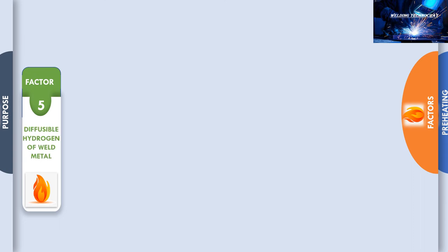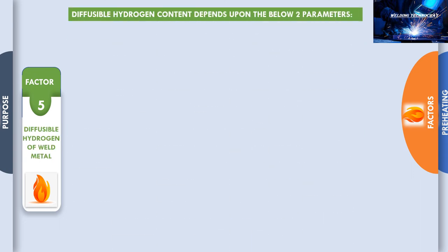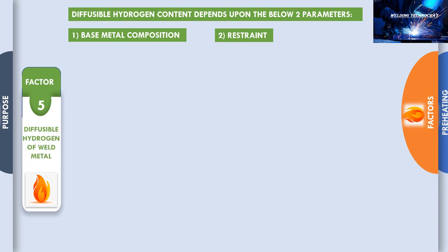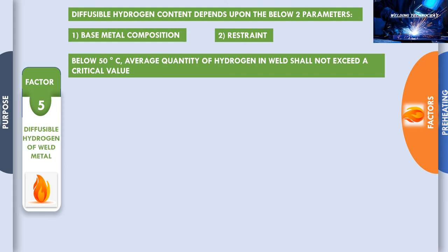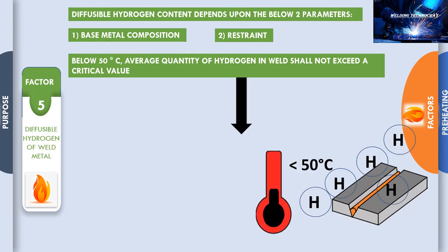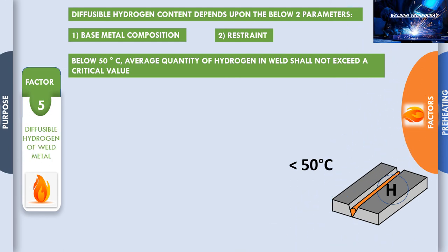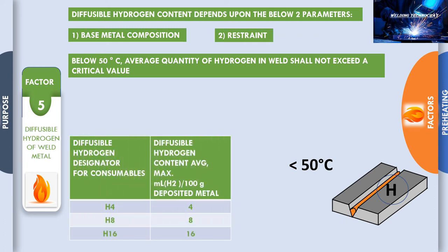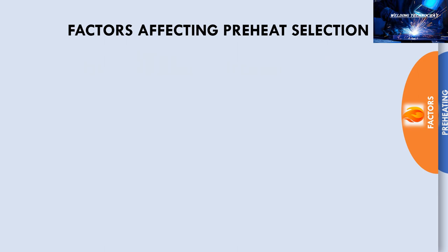Factor five is the diffusible hydrogen content of the weld metal. The diffusible hydrogen content depends on two parameters: first, base metal composition, and second, restraint. The hydrogen control method is based on the assumption that cracking will not occur if the average quantity of hydrogen remaining in the joint after it has cooled down to about 50 degrees Celsius does not exceed a critical value. The table shows the diffusible hydrogen designator susceptibility index grouping as a function of hydrogen level H. For example, H4 indicates that the average diffusible hydrogen content shall be a maximum of 4 milliliters per 100 grams of deposited metal.